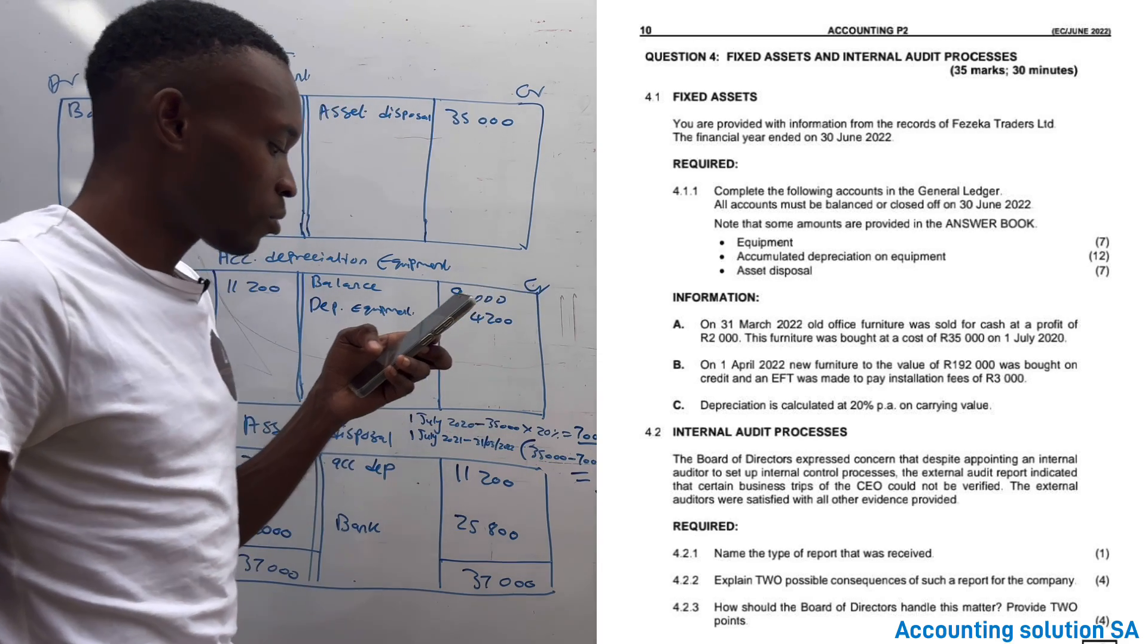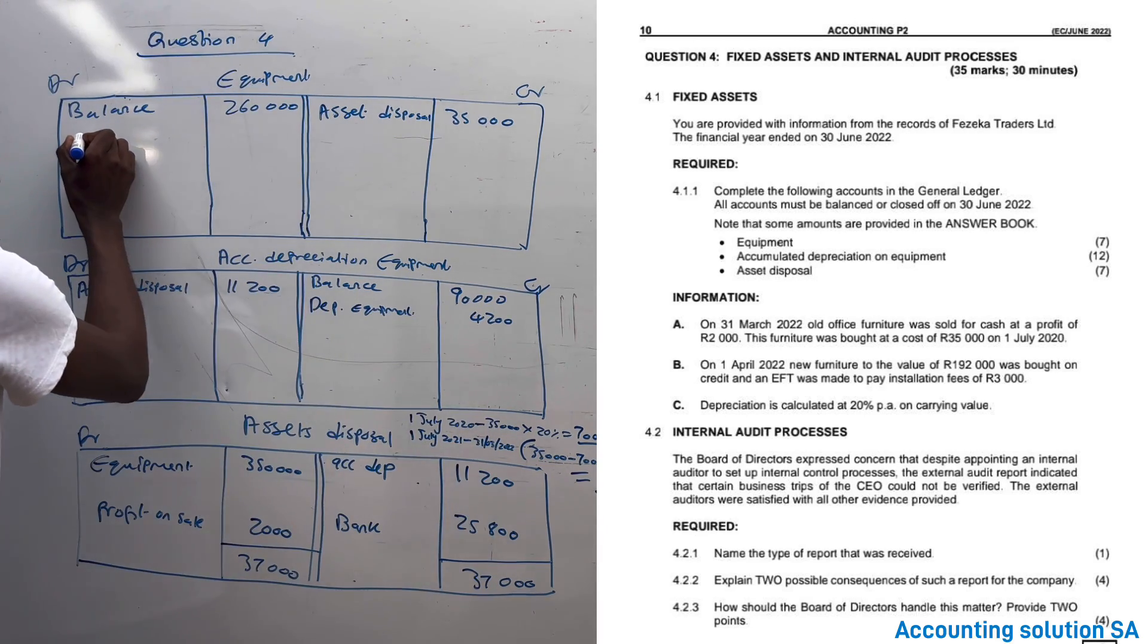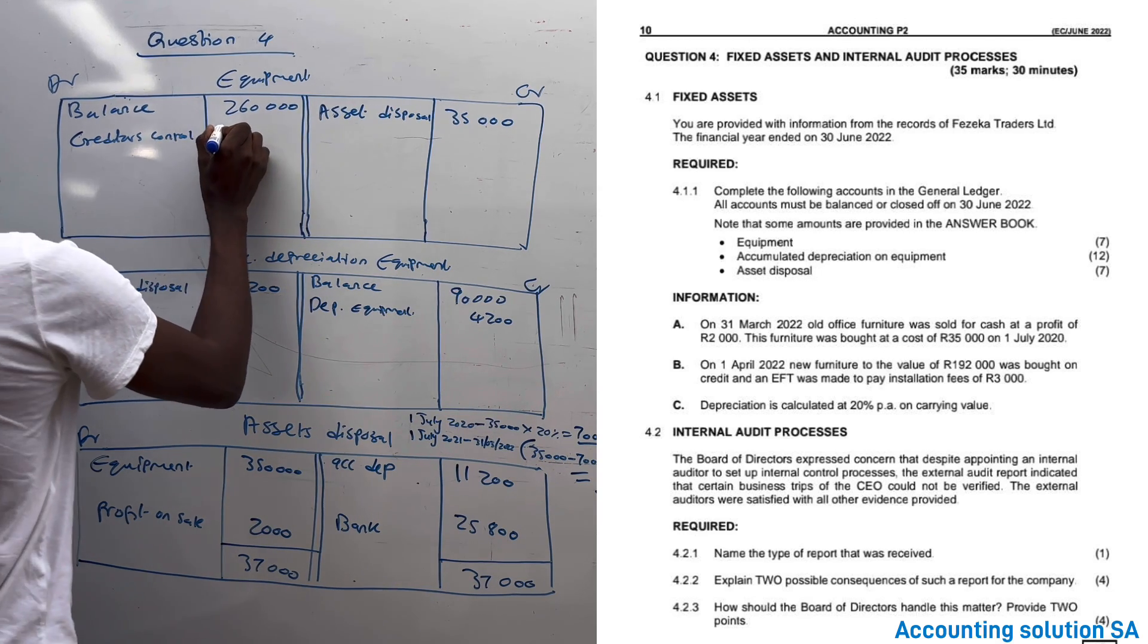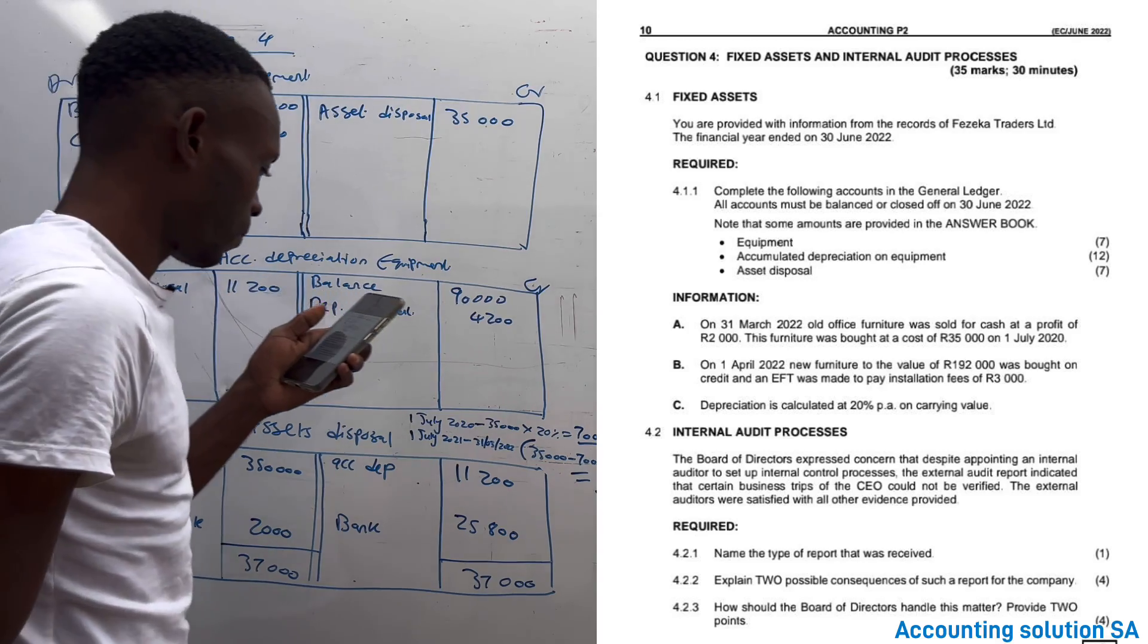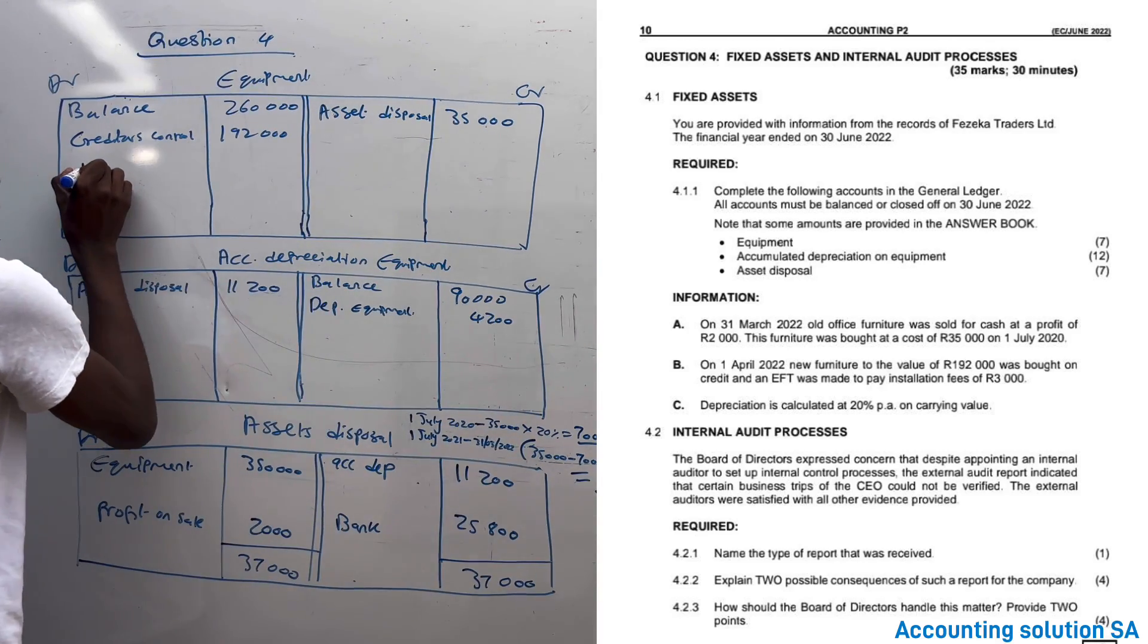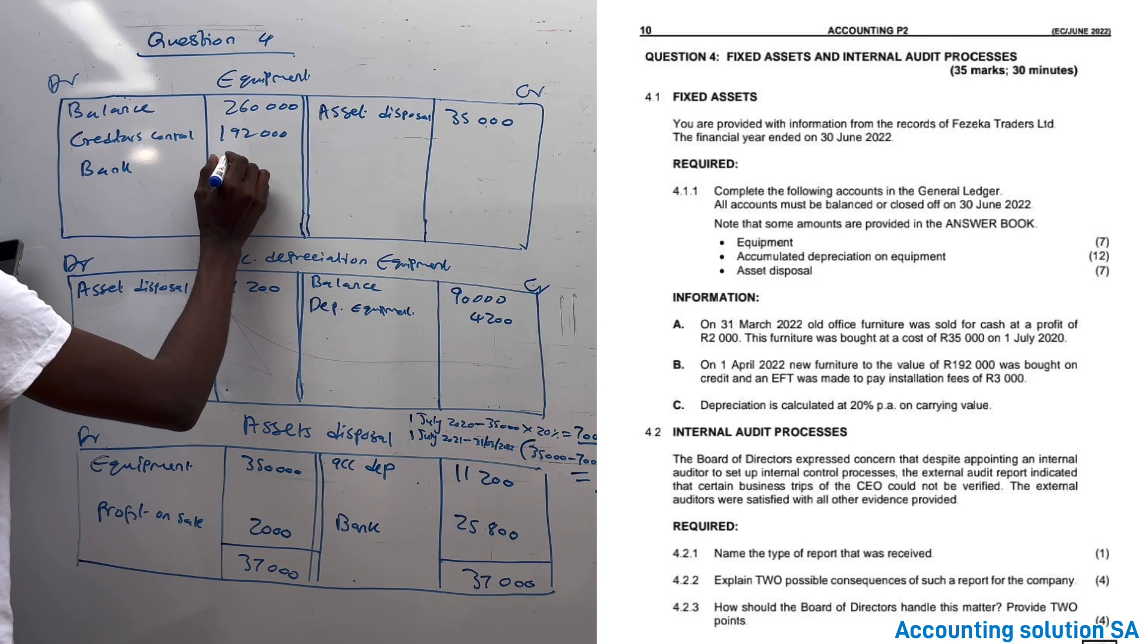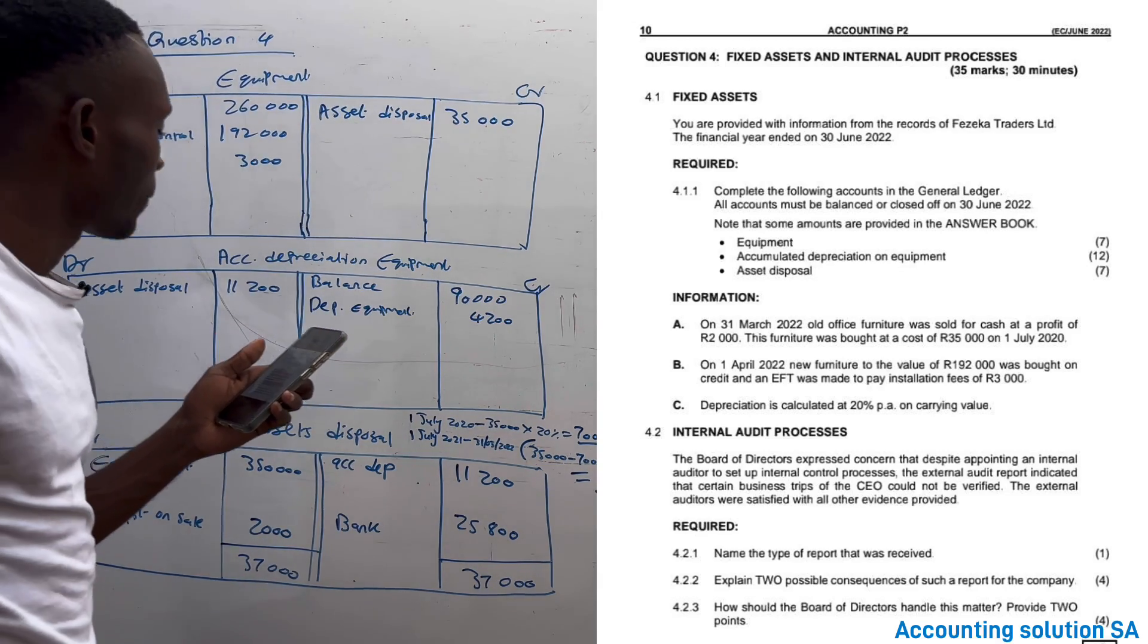Now, the next one. On 1 April 2022, a new furniture valued $192,000 was bought. We buy on credit, creditors control $192,000. And on the same day, EFT is cash, was made for installation. You know that installation must form part of the cost price. And the amount is $3,000.